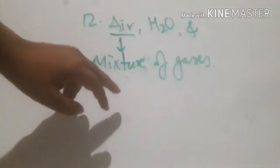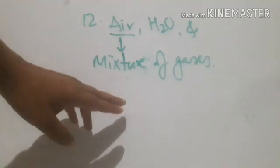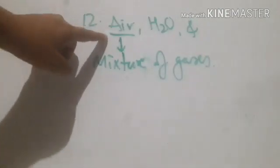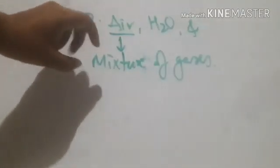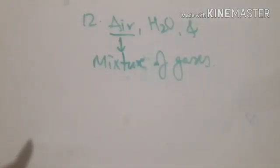For example, we know that oxygen, carbon dioxide, hydrogen, nitrogen — different gases are there. These gases combine together and form the air. So it is called a mixture of gases. Whatever air that we are breathing contains all this mixture of gases, not only oxygen. Air is the mixture of gases — always remember.